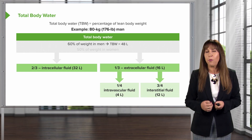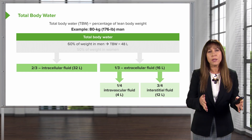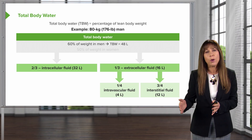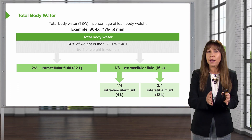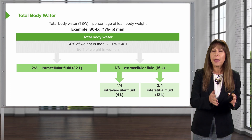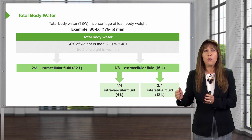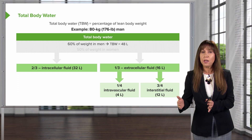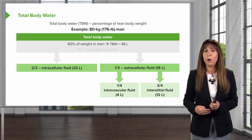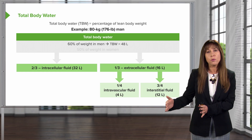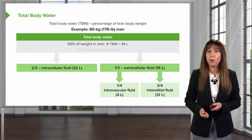Let's take an example. If we have an 80-kilogram man, and 60% of his weight is total body water, he has about 48 liters of total body water. Two-thirds of that is going to be in the intracellular compartment — that means 32 liters reside within the cells. One-third, or 16 liters, will reside within the extracellular fluid compartment. Of that, we have 12 liters within the interstitial fluid, and only four liters is actually circulating within the vascular volume.